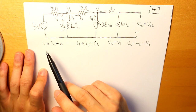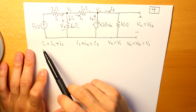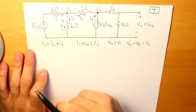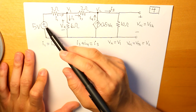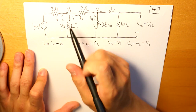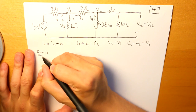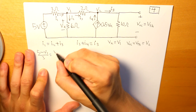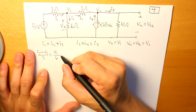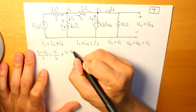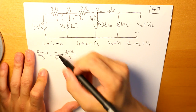Now we will define current as voltage divided by resistance using Ohm's law. I1 is flowing from the 5-volt voltage source to node voltage V1. So we get: (5 − V1)/3 = V1/6 + (V1 − V2)/2. That is our first KCL equation.